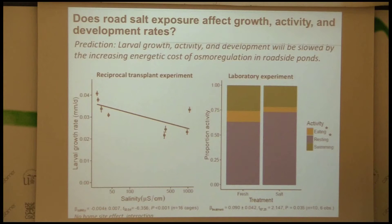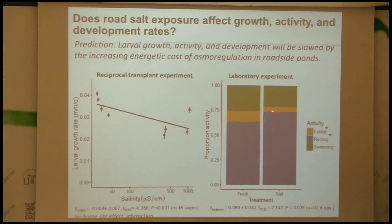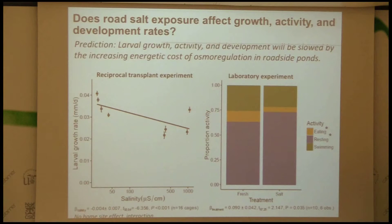We've looked at behavior, and behavior has shifted to a significant increase in the amount of time they spend resting — in a separate experiment. Less time eating and a little less time swimming. But mostly this shift in behavior could add to the story of metabolic cost. Also, eating less could be another hindrance toward overcoming the osmotic stress.